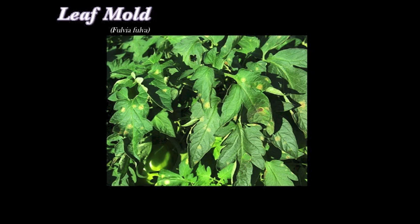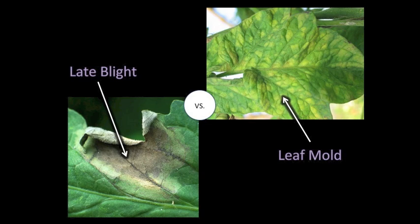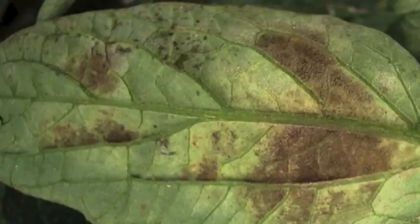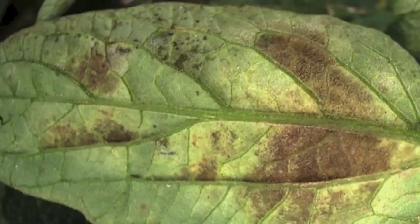Next is leaf mold. Leaf mold only affects tomato, and symptoms are usually found on leaves. It's mainly found on tomatoes grown in high tunnels or a greenhouse, but is starting to be seen more often in fields. Symptoms start as pale green or yellowish spots on the top of the leaf. These spots eventually develop into yellow lesions restricted by the leaf veins, with velvety olive-green masses of spores on the underside.